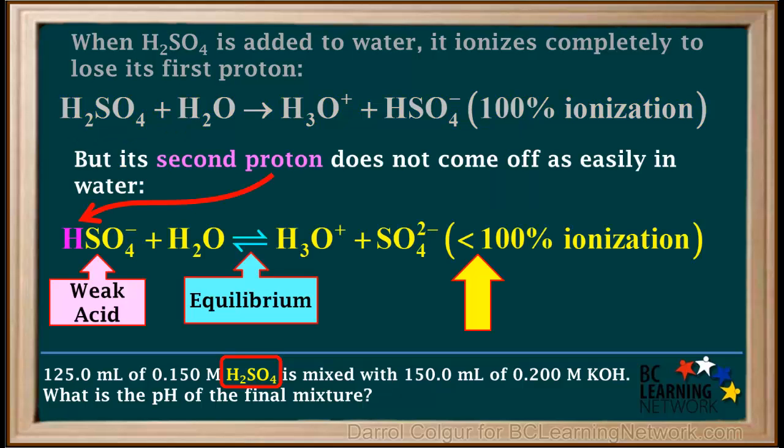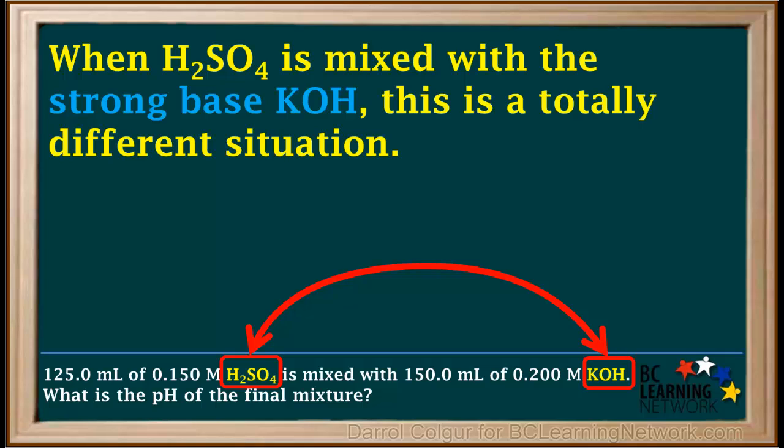But when it's just in water, the second proton does not come off as easily. This proton comes off when HSO4 minus ionizes, but HSO4 minus is a weak acid, so its ionization in water is very limited. However, when HSO4 is mixed with a strong base, KOH, this is a totally different situation.